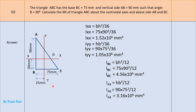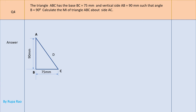Now we calculate MI about side AC for the same triangle. The triangle ABC has BC = 75 mm, AB = 90 mm, and angle B = 90°. To find MI about AC, we draw a perpendicular from point B onto line AC, meeting it at point D. This perpendicular BD becomes the height of the triangle with respect to base AC.